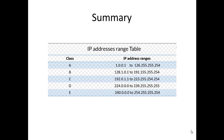In the last class we discussed classful IP addressing — class A, B, C, D and E — and why we need to divide IP addresses into such classes. Class A starts from 1.0.0.1 and goes to 126.255.255.254. Class B starts from 128.1.0.1. Some IP addresses are kept for special purposes, like 127 which is reserved for loopback services. Class D and E are reserved for future use.